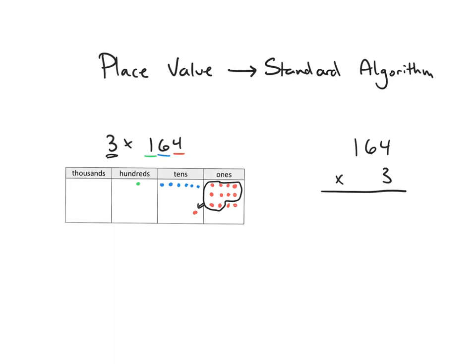What this process looks like in the standard algorithm is pretty similar. I'm going to be multiplying 3 times the four 1s right up here, and I get the same answer — 3 times 4 ones is 12. I'm going to put the 2 in the ones place of the 12 down below. What's different about the standard algorithm is the regrouped 1 ten, so this 10 right here — I'm actually going to put it above the 10s place in my second factor. We'll see what happens with that next.